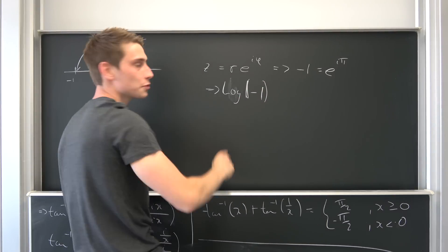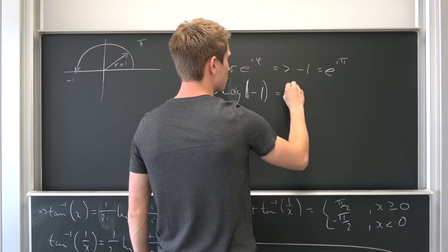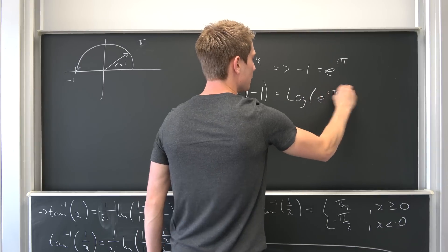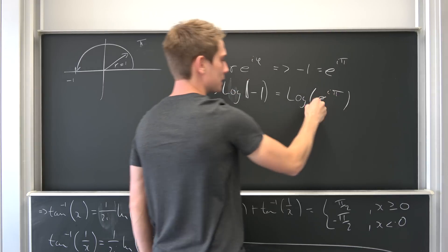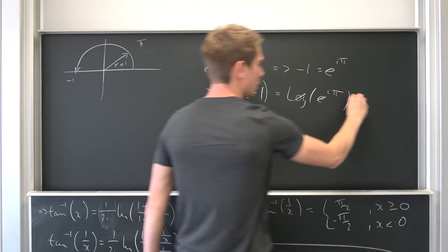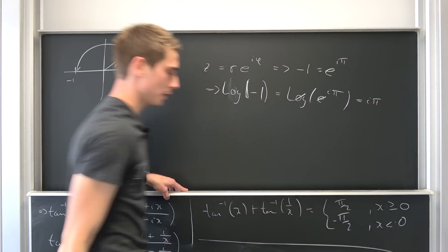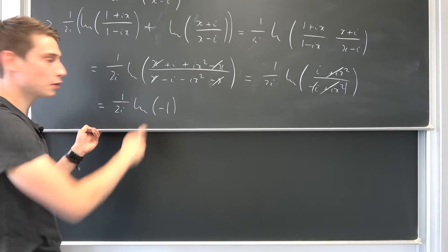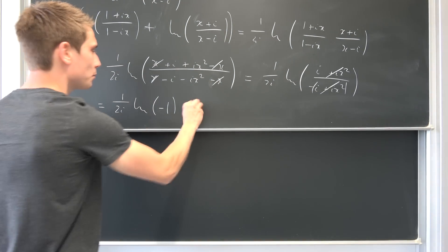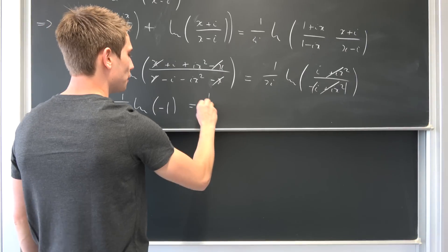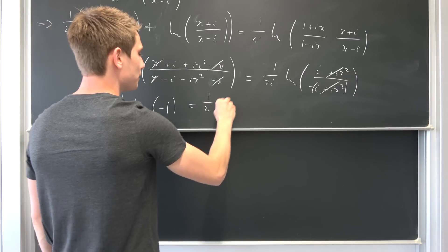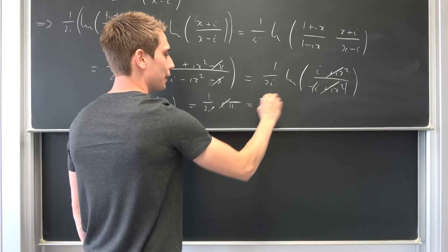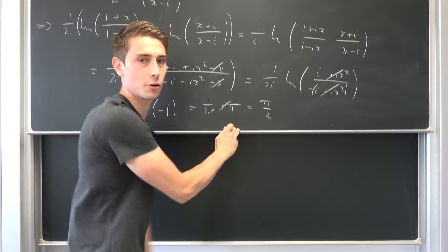The principal log of −1 equals the log of e^(iπ). This cancels to give us iπ. So the natural log of −1, on the principal branch, is iπ. Then 1/(2i)·iπ = π/2. The first case is done.